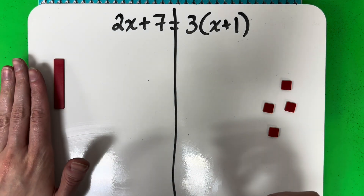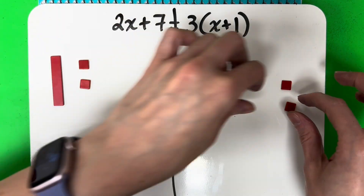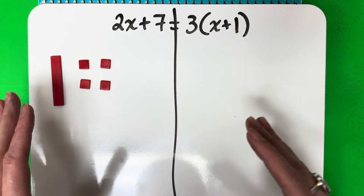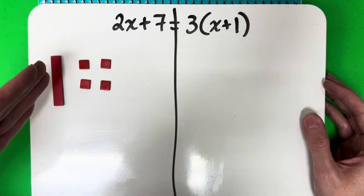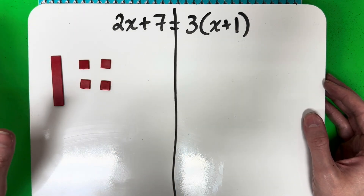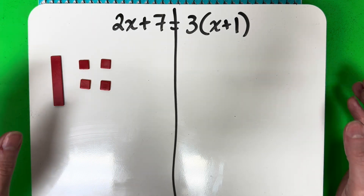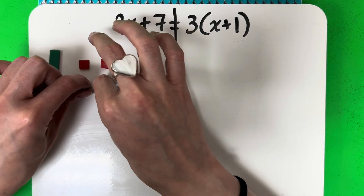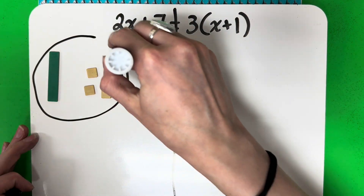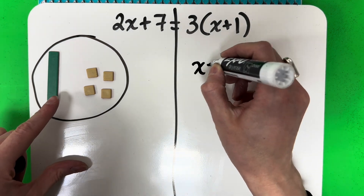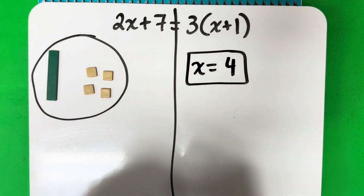Now we match them up. I have one rectangle — how many squares can I give to that one rectangle? I can give all of them: there's 4. Now remember, in my last step my rectangle cannot be red, it has to be green — I can't have a negative x. So to fix that, you flip it to make it positive, but if you flip it you've got to flip everything. So this is now positive x, and flip it all. This is your answer: x equals 1, 2, 3, 4 positive because they're not red. x equals 4.